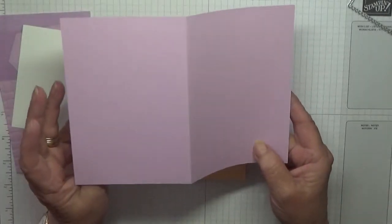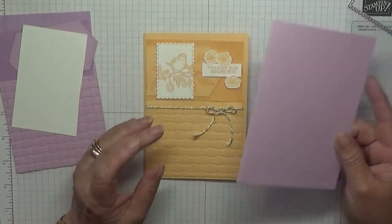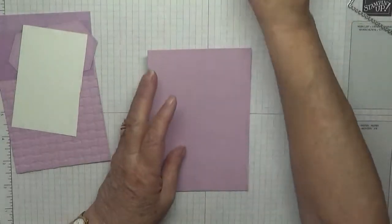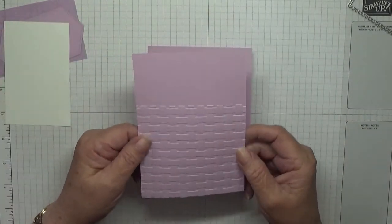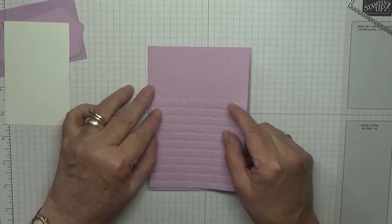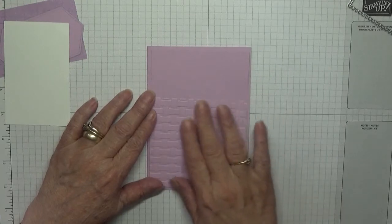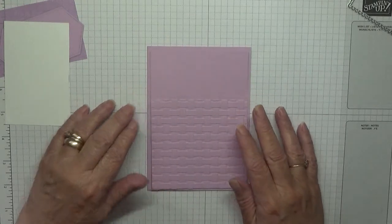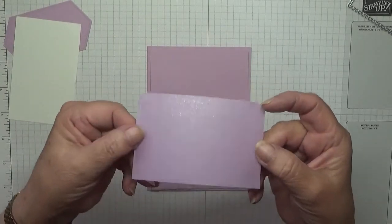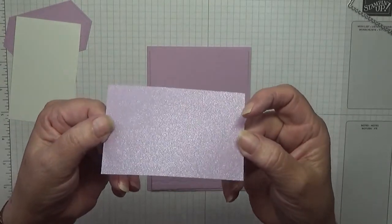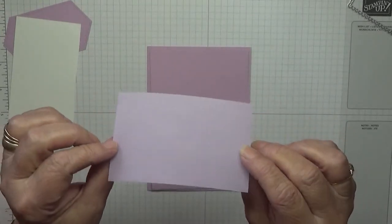I've got a card base of eight and a quarter by five and seven eighths, scored at four and one eighth, folded in half. I've got another piece at five and five eighths by three and seven eighths, and I've already embossed it. I've only embossed half of it.